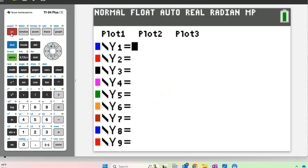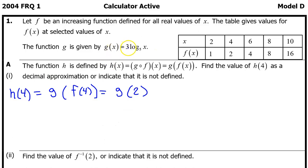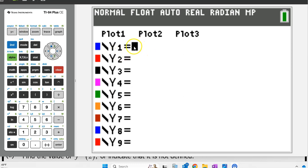Hit your y equals button and let's enter g of x as y1. Remember, g of x is 3 log base 5 of x. How do you type in 3 log base 5 of x?